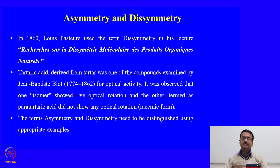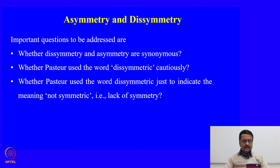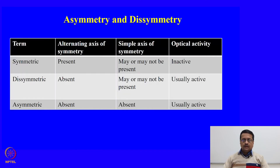The terms asymmetry and dissymmetry need to be distinguished using appropriate examples. In this class today, we will discuss asymmetry and dissymmetry and address three important questions: whether dissymmetry and asymmetry are synonyms; whether Pasteur used the word dissymmetric cautiously; and whether Pasteur used dissymmetric simply to indicate the lack of symmetry. To begin, I draw your attention to a simple table useful in understanding this topic.